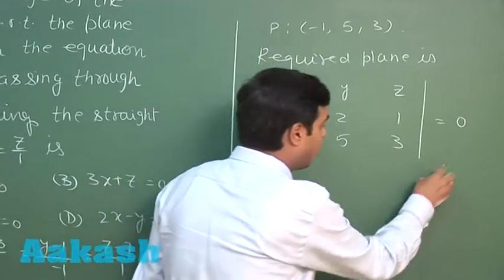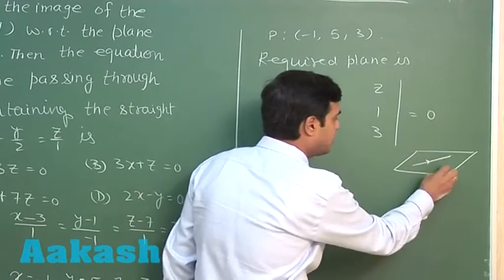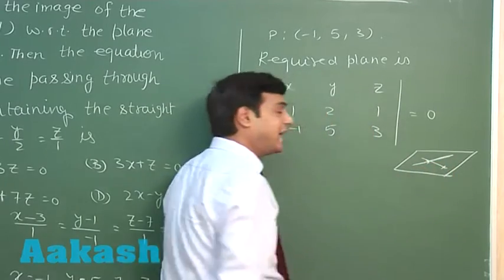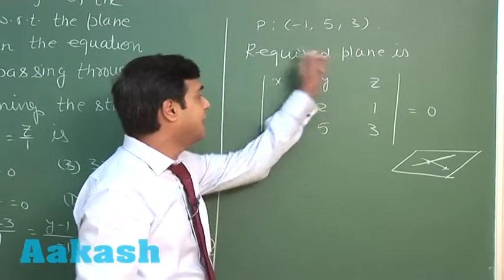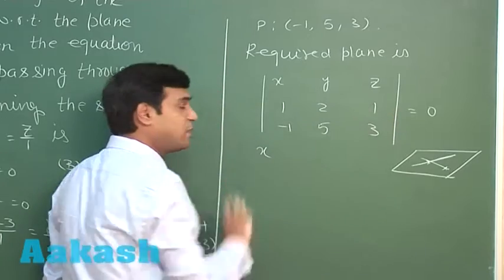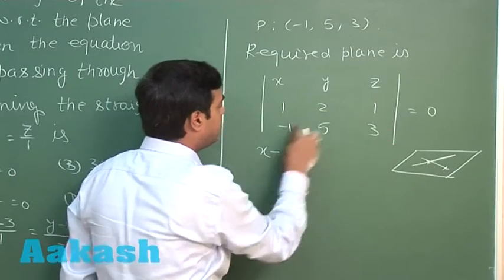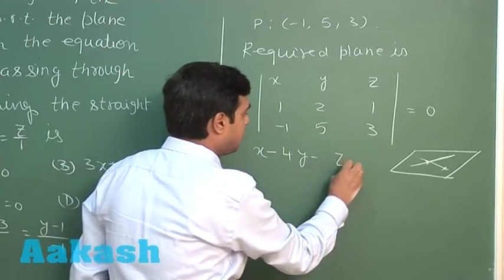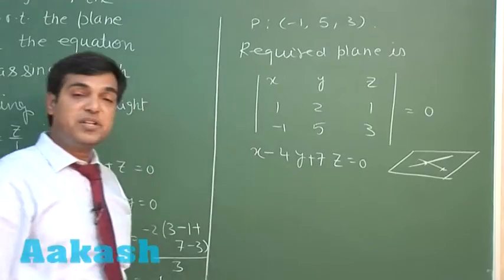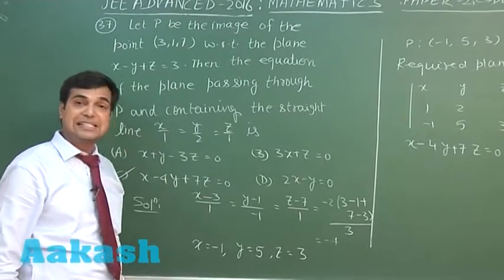Setting up the determinant with rows (x, y, z), (1, 2, 1), and (minus 1, 5, 3) equals 0, and expanding: x times (6 minus 5) minus y times (3 plus 1) plus z times (5 plus 2) equals 0. This simplifies to x minus 4y plus 7z equals 0. So option C is correct.